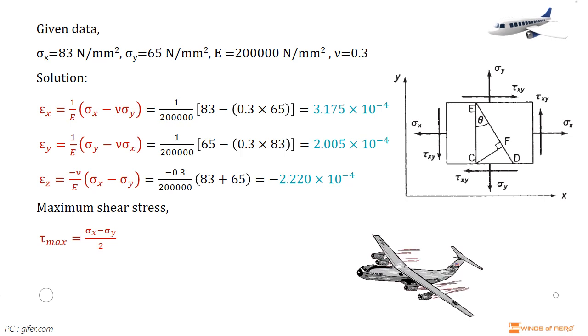Like the normal stress, the shear stress will also have a maximum at a given angle. The maximum shear stress is given by tau max equals sigma x minus sigma y divided by 2. Solve this equation with known values. Then maximum shear stress tau max is equal to 9 N per millimeter square, which is acting on planes at 45 degrees to the principal planes.